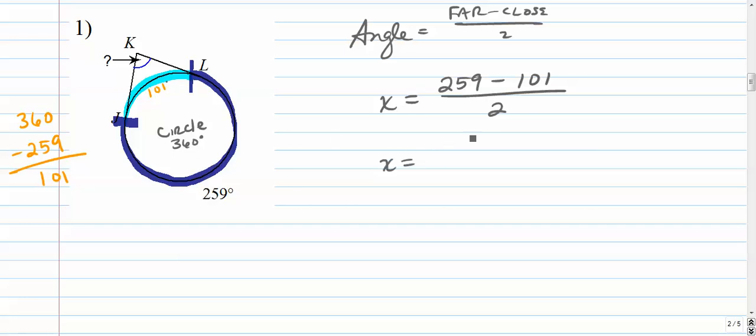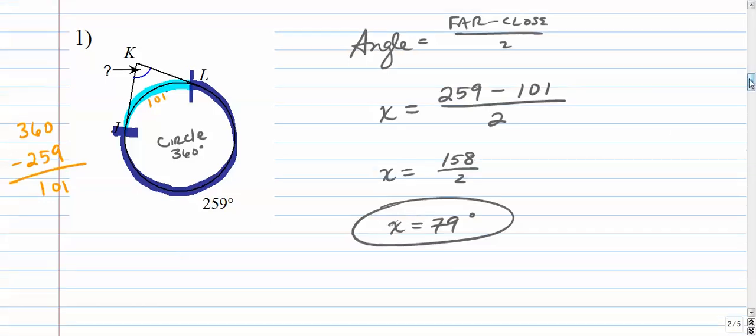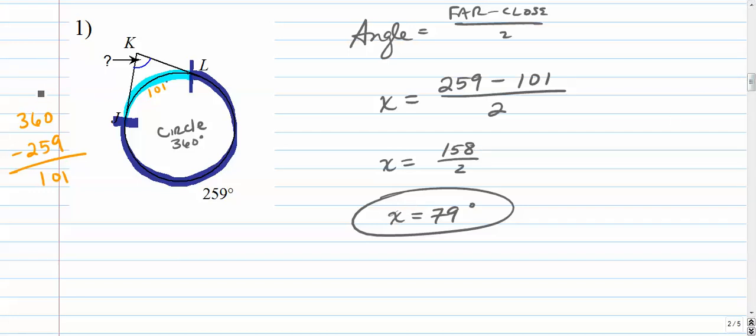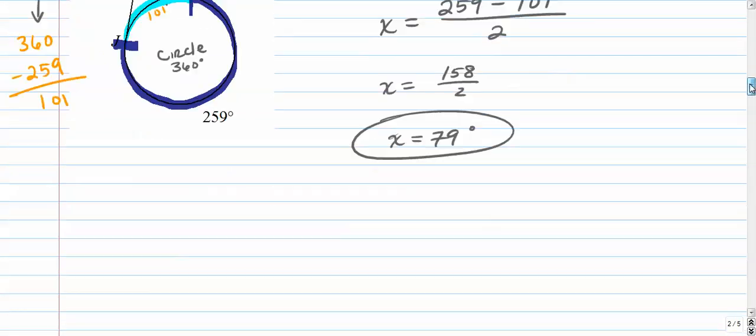And all we need to do is simplify this now. 259 minus 101 is 158. Over 2 is 79, I think. Yeah, 79. So we're going to use that trick a lot. We're going to use this guy right here, 360 minus whatever is already there. Number 2.